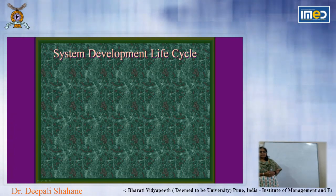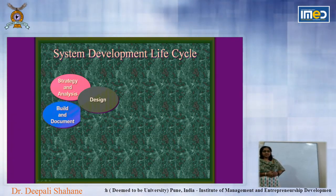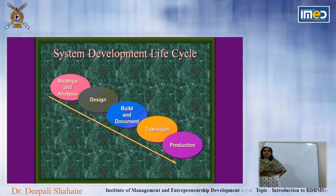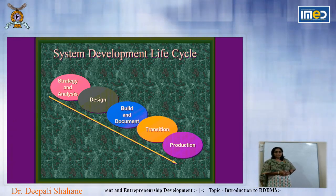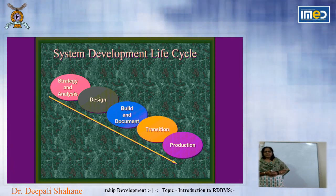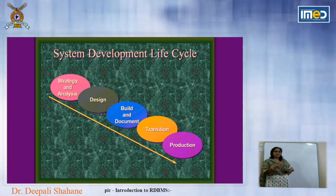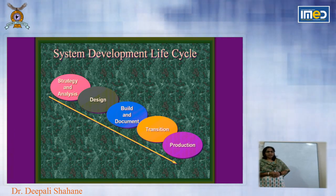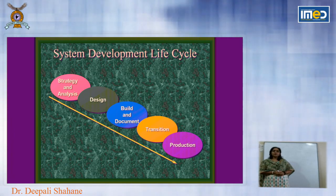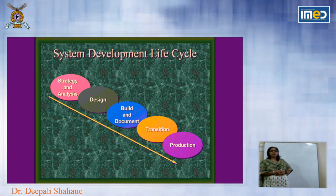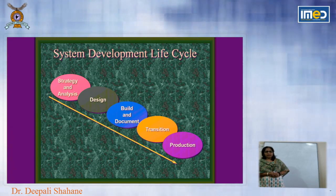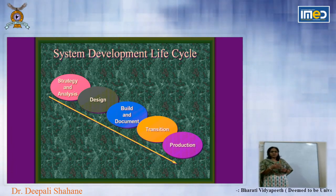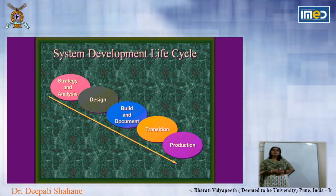Now we will see the system development life cycle. In the system development life cycle there are four phases which every product development follows. The first step is related to strategy and analysis — that is, from concept to production we can develop a database using the system development life cycle. In strategy and analysis we decide what kind of database has to be designed and how the data has to be collected.